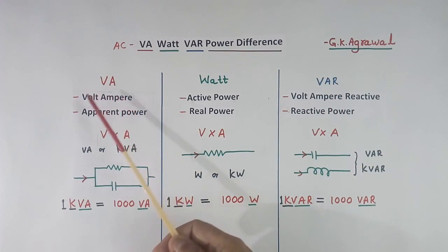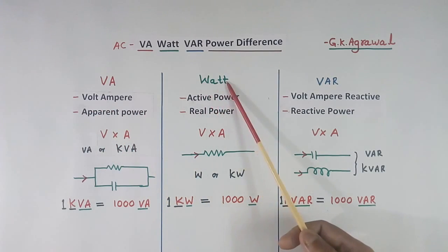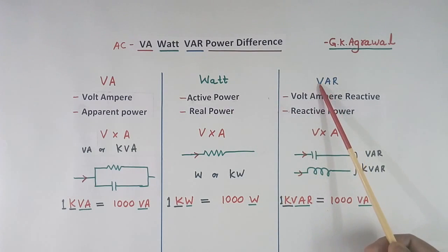VA means volt ampere, also called apparent power. Watt is the unit of active power, also called real power. VAR means volt ampere reactive, called in brief reactive power.